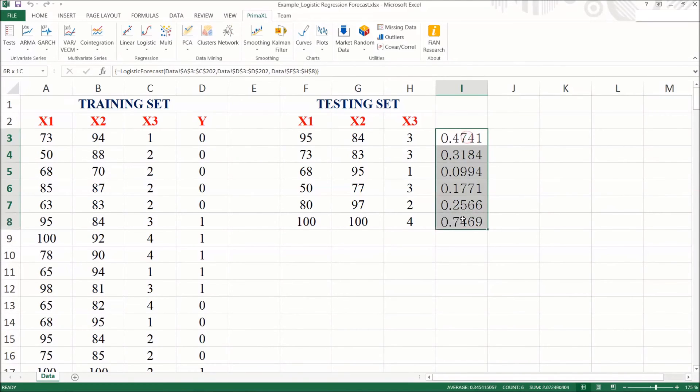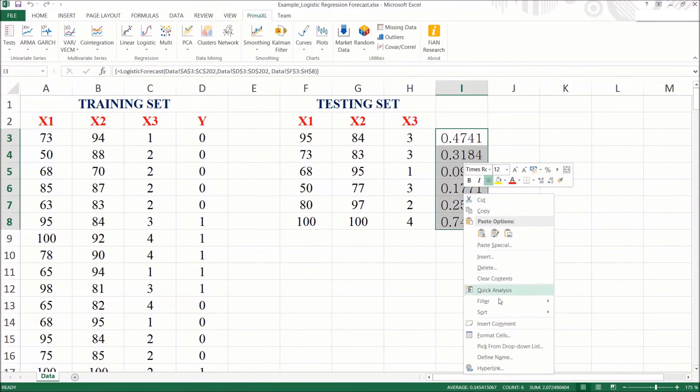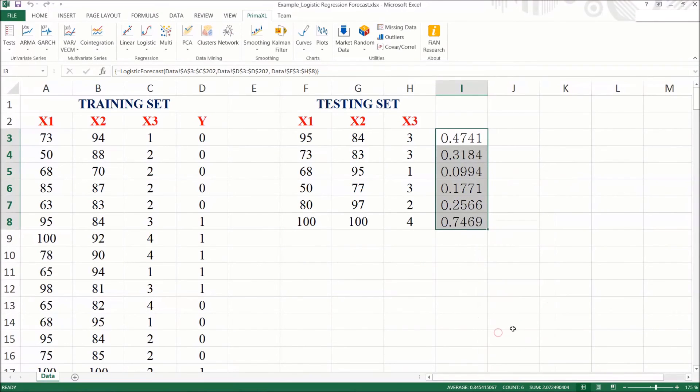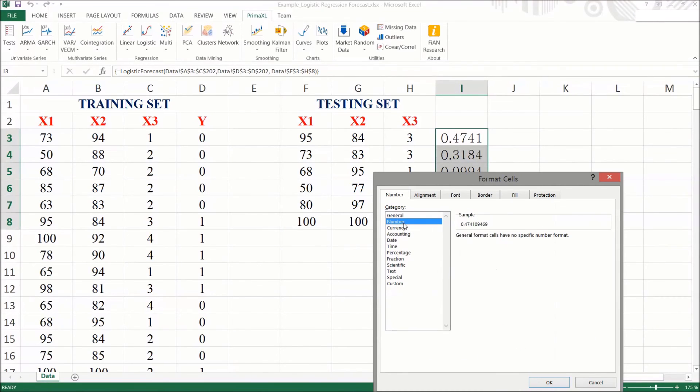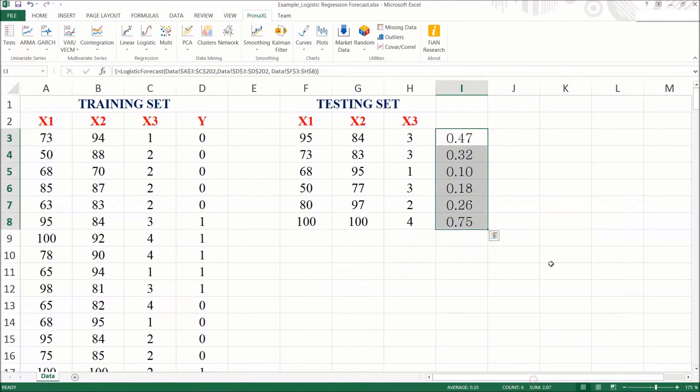We can format the numbers so that they look nicer. Please remember that these numbers represent the probabilities, which should be values between 0 and 1.